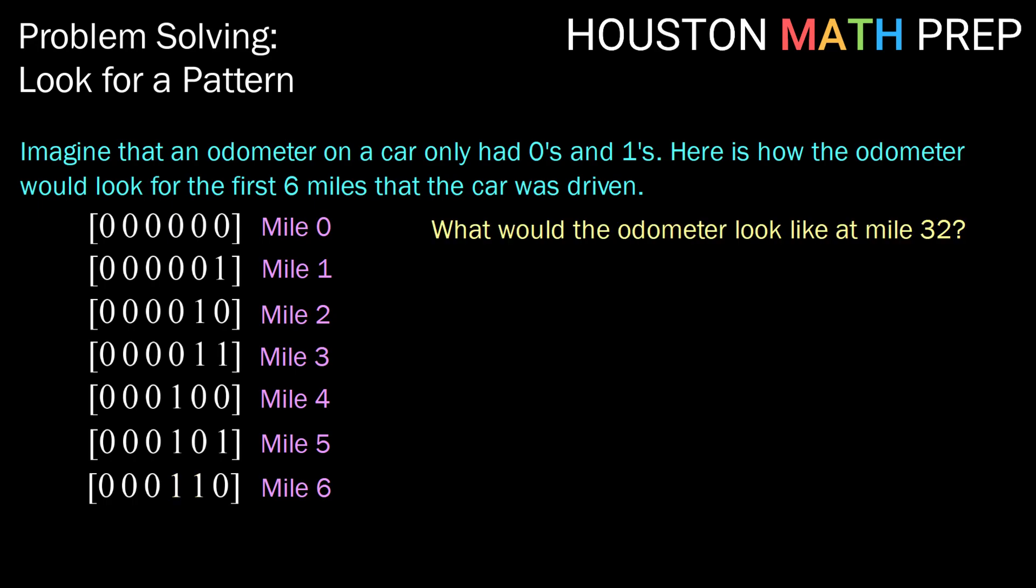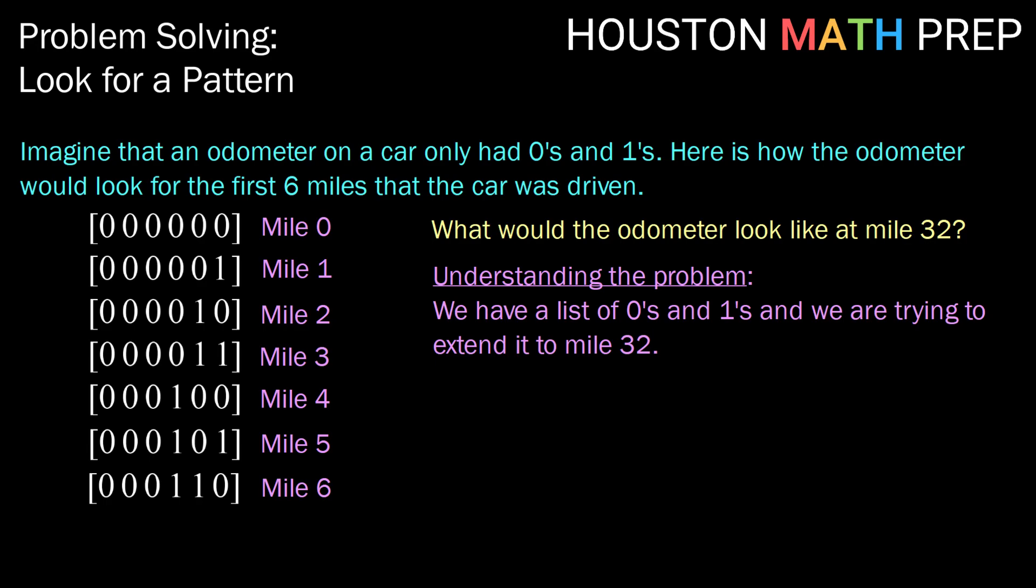So the question that we want to ask given this pattern is what would the odometer look like at mile 32? Well, let's go through our process. Let's make sure first that we understand the problem. So here we have a list of zeros and ones. We're given the beginning of the pattern for the first zero through six miles, and we're going to try to understand that problem and extend it through mile 32.